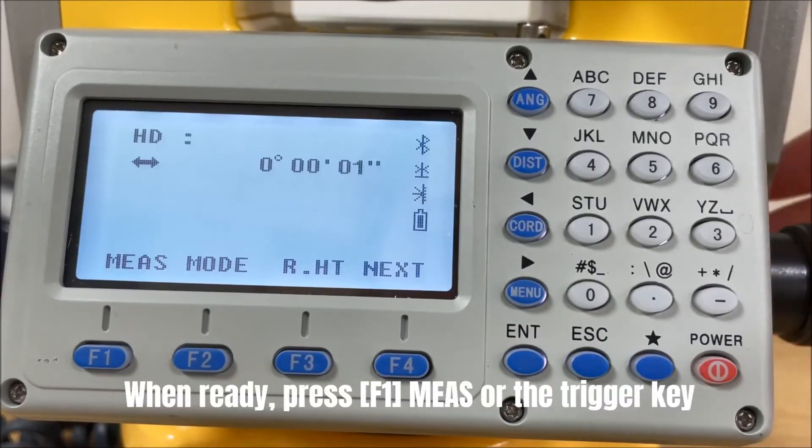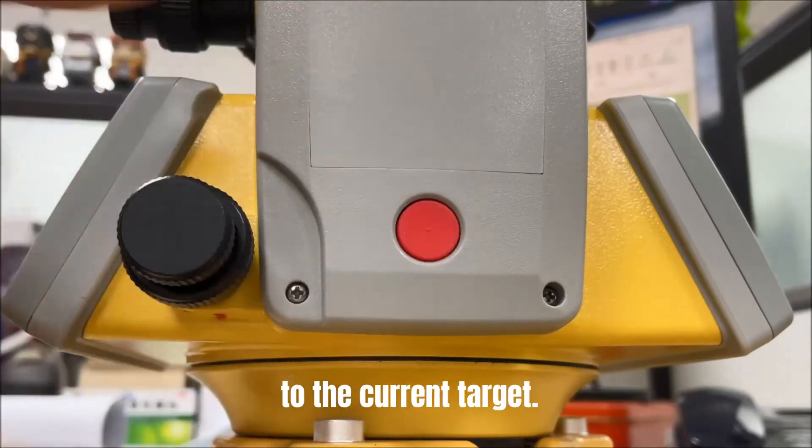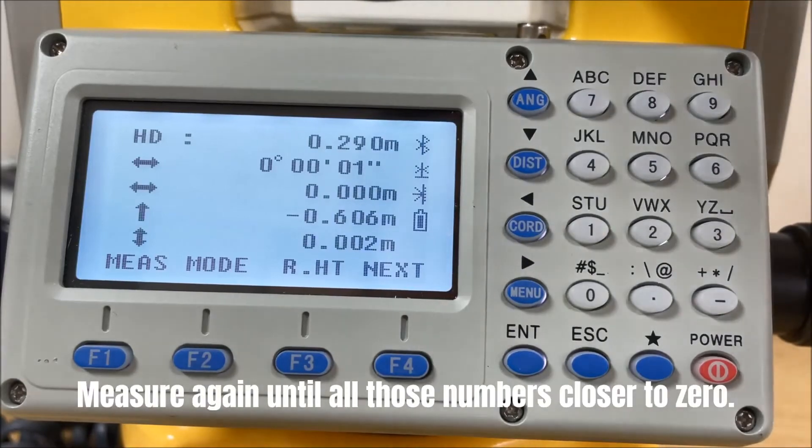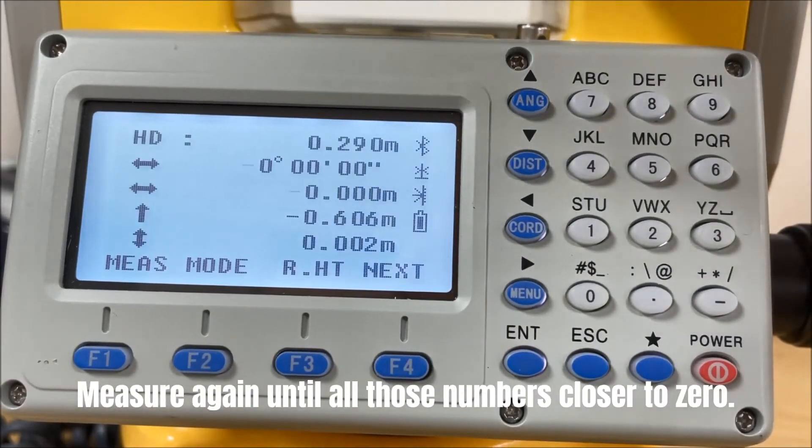When ready, press F1 measure or the trigger key to measure the current target. Move the target based on the guidance. Measure again until all those numbers closer to zero.